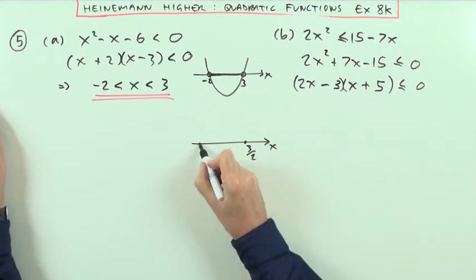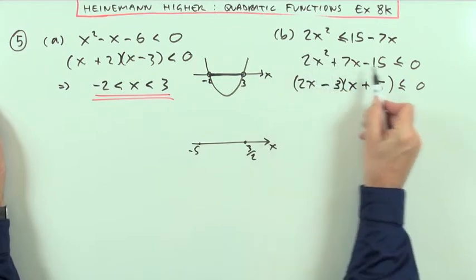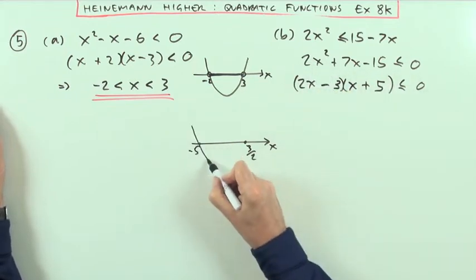And at negative 5 there's a zero. And it's a positive x² that you were considering, so it must look like this.